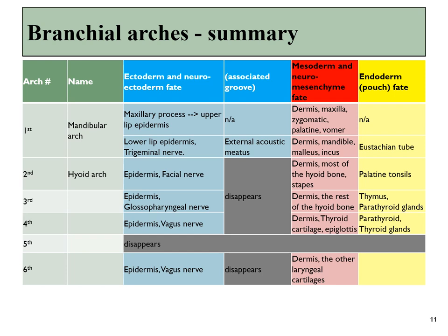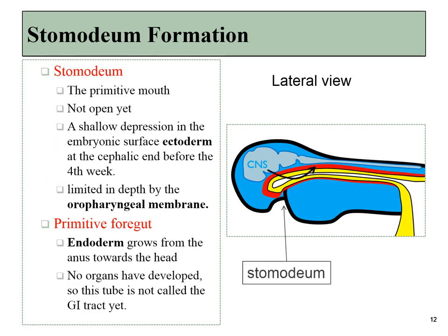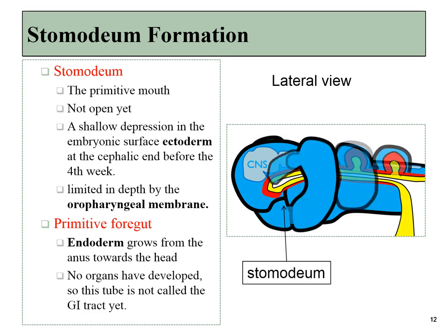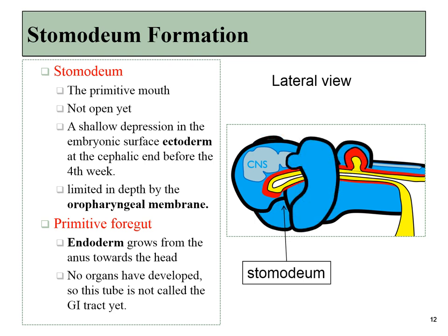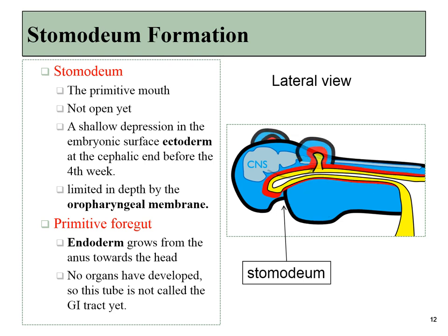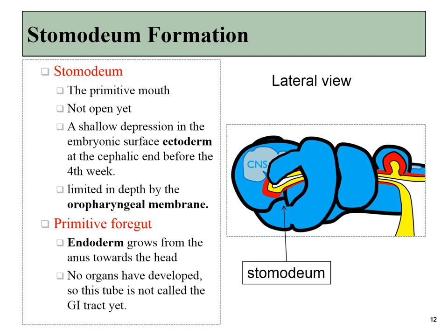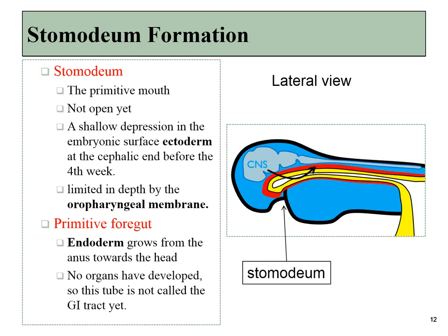Here is an overview of the six branchial arches that we will cover. You'll notice one of them disappears, and we'll be focusing most heavily on the first two. At the fourth week of development, there's no mouth yet, but there is a shallow depression called the stomodium. Growing toward the stomodium is the primitive foregut, which was formed by the process of invagination during gastrulation. It started at the anus and has been slowly growing forwards, and will ultimately fuse with the stomodium to make a single tube running from mouth to anus. This tube is lined with endoderm.